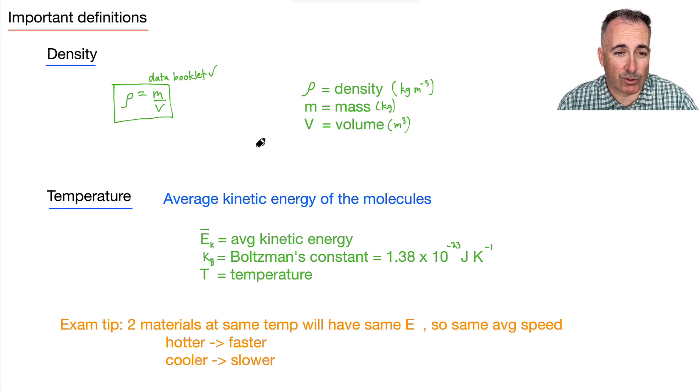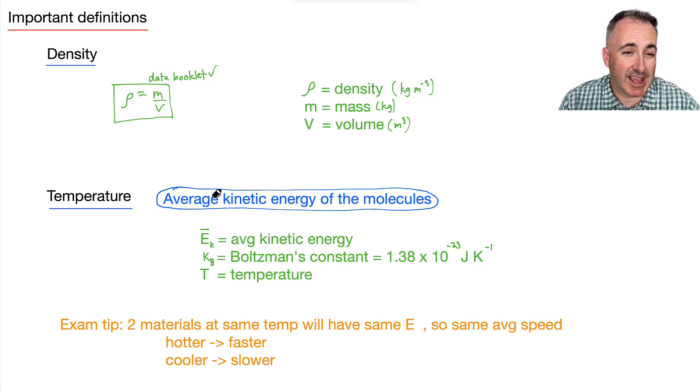Now we have temperature. This is a really important definition. You need to know this. This is often asked on exams. So you need to know it's the average kinetic energy of the molecules. And if you think about kinetic energy, remember, it's like EK equals half M V squared. So what does this really mean? It means that things that move faster have a higher kinetic energy and therefore are hotter.